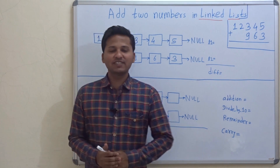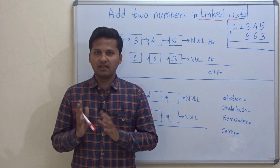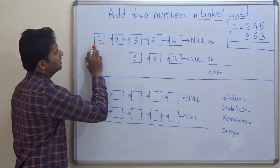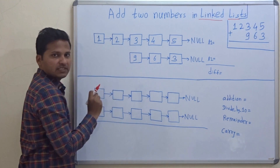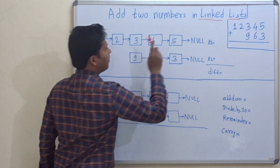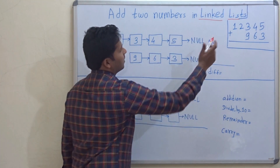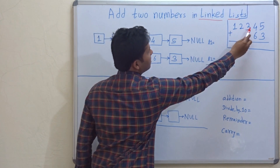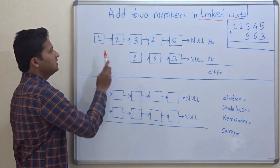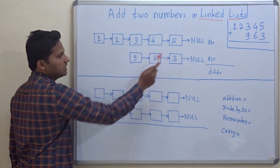Hello friends, today we are going to see how to add two numbers represented by a linked list. Let's see the examples. These are the two numbers which are represented by linked list, and these are the original form of these numbers. One number is 12,345 and the second is 963. You can see here 12,345 and 963.